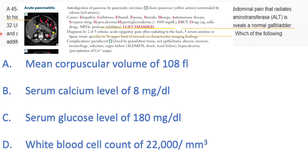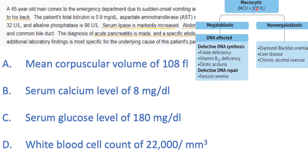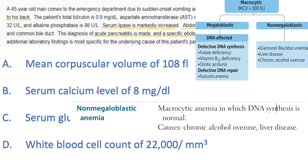The question asks which additional lab finding is most specific for the underlying cause — alcoholism. In addition to the AST:ALT ratio over two, what else do chronic alcoholics have? A mean corpuscular volume of 108 is macrocytosis, and this is indeed seen in chronic alcoholics. Chronic alcohol overuse causes vitamin deficiencies including folate, and alcohol's toxic effect on bone marrow impairs proper red cell synthesis, leading to macrocytosis.